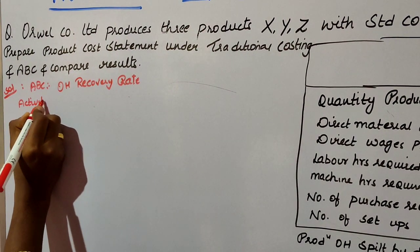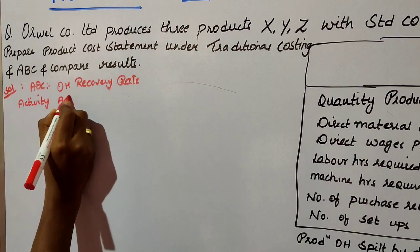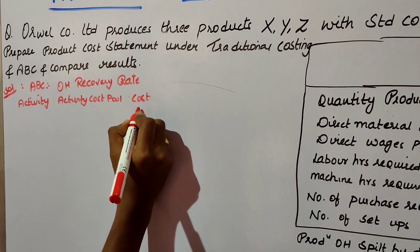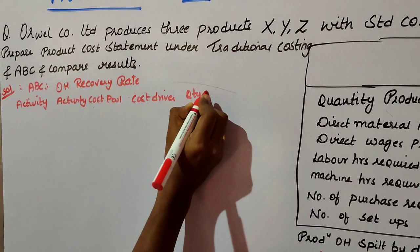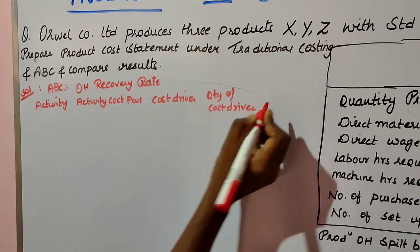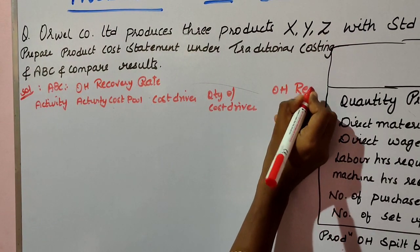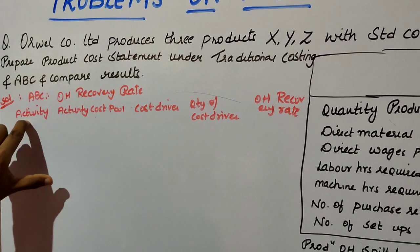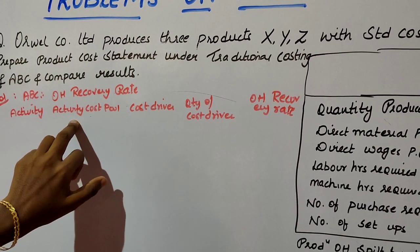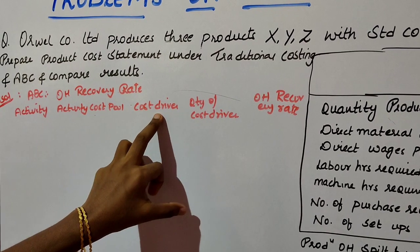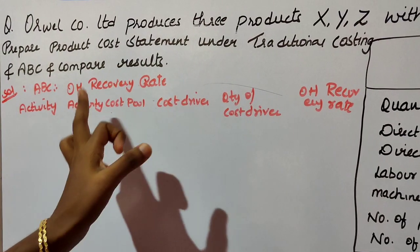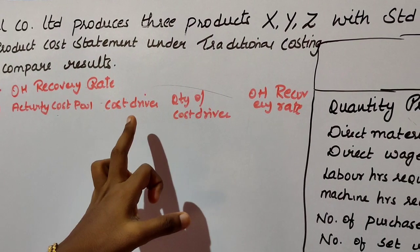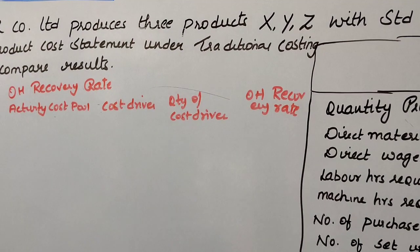The steps are: first, find out the activity; next, the activity cost pool, which is the total of all the activities; then the cost driver — that is, the factor which causes cost for the activity; and the quantity of cost driver being used. Based on all this, we find out the overhead recovery rate by dividing total activity cost pool by the quantity of cost driver.